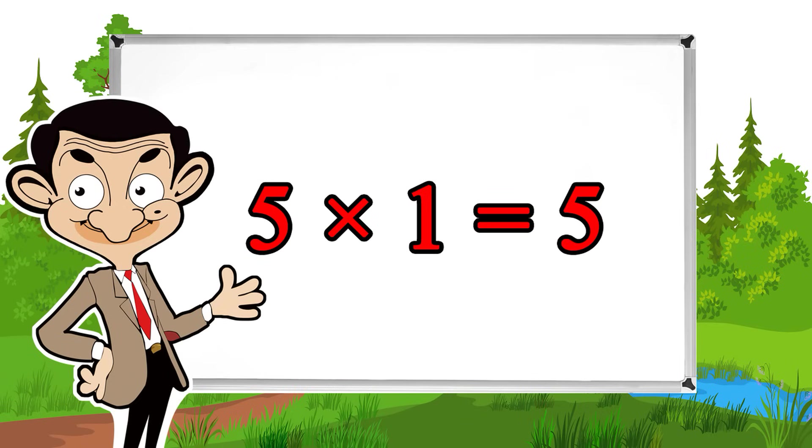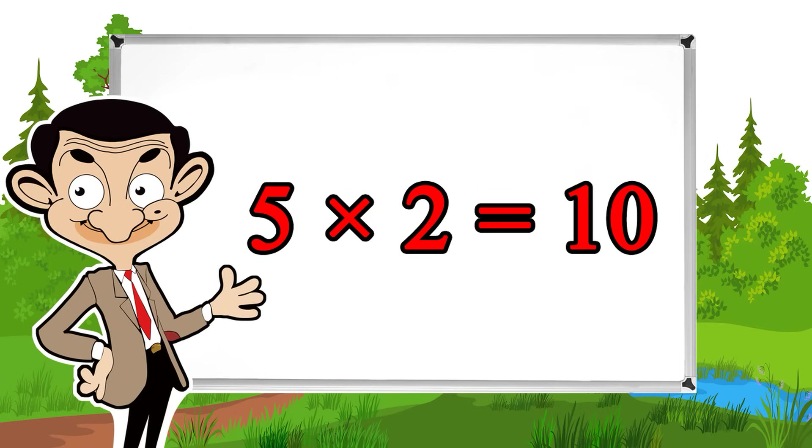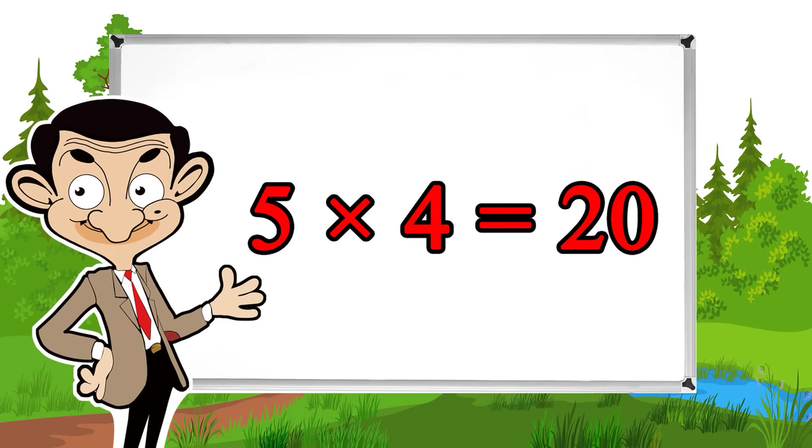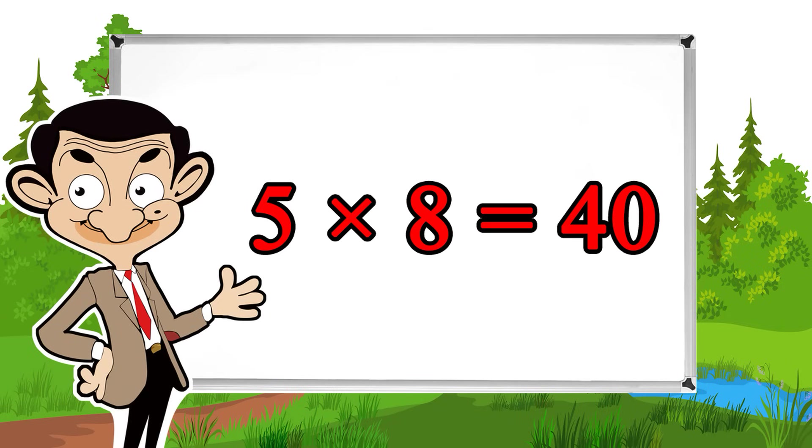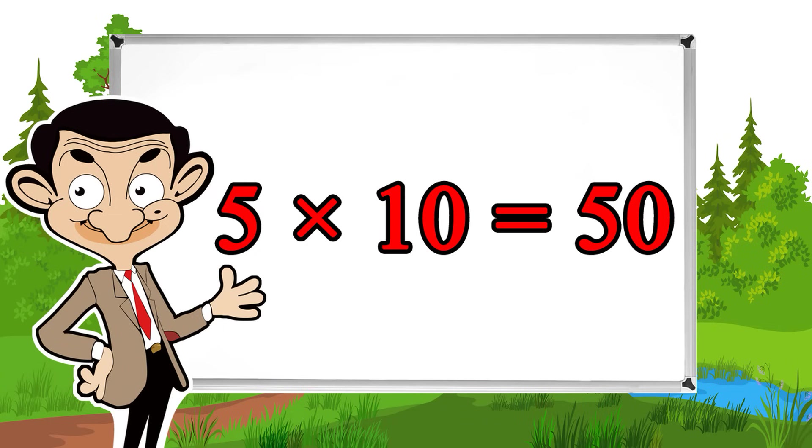5 times 1 equals 5, 5 times 2 equals 10, 5 times 3 equals 15, 5 times 4 equals 20, 5 times 5 equals 25, 5 times 6 equals 30, 5 times 7 equals 35, 5 times 8 equals 40, 5 times 9 equals 45, 5 times 10 equals 50.